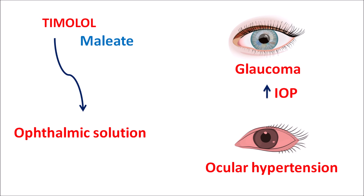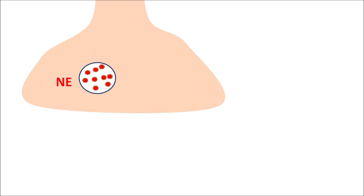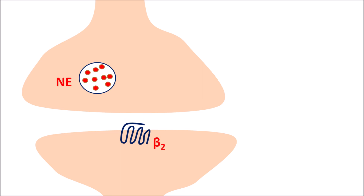Now let us see how timolol acts. Timolol acts on the adrenergic neurons supplying the eye, which are equipped with the norepinephrine mediator. Beta-2 receptors are present on the post-synaptic adrenergic neurons. When norepinephrine is released, it acts on these beta-2 receptors, resulting in the activation of the post-synaptic neurons.